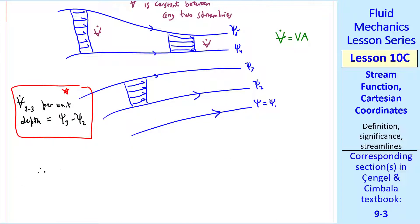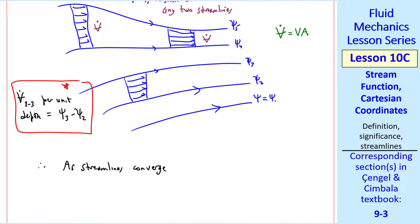So we can say, therefore, that as streamlines converge, as here, the flow is accelerating. The speed is increasing. But the volume flow rate has to stay the same since no flow can cross a streamline by definition, since a streamline is everywhere tangent to the local velocity vector.